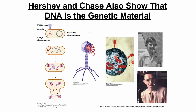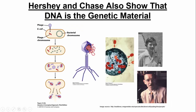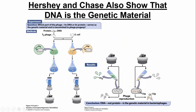Another group of scientists around the same time, Hershey and Chase, also showed that DNA was the genetic material, but in a slightly different way using viruses that infect bacteria. They took these viruses and bacteria and grew them up either in a radioactive medium with radioactive sulfur — which labeled proteins — or in a medium with radioactive phosphorus, which labeled the DNA. They knew that these viruses infected the bacteria, and they wanted to see what was injected into the bacteria and what was left on the outside. Whatever was injected was probably the genetic material.